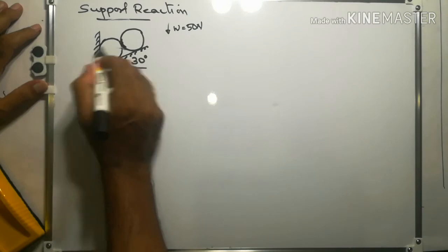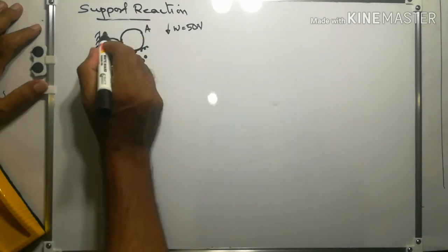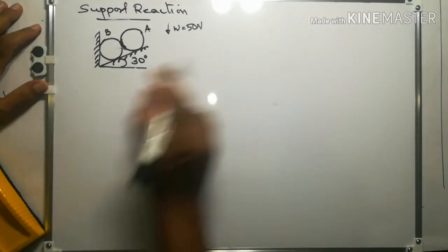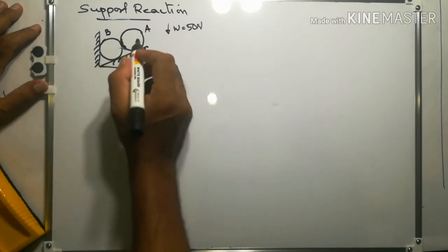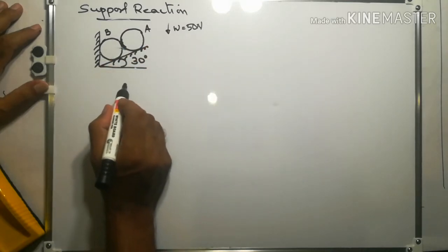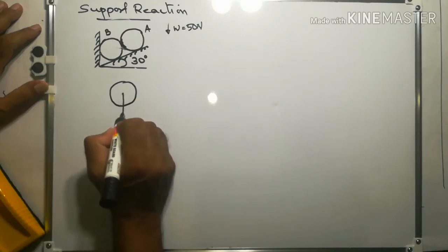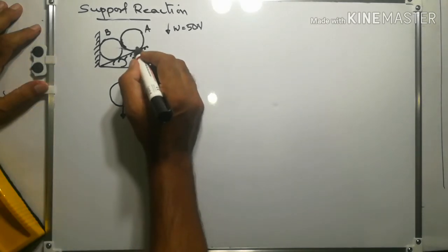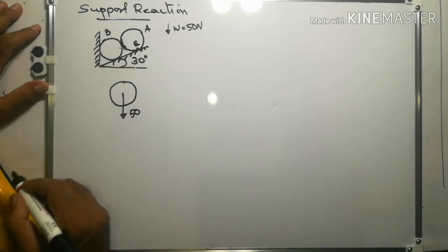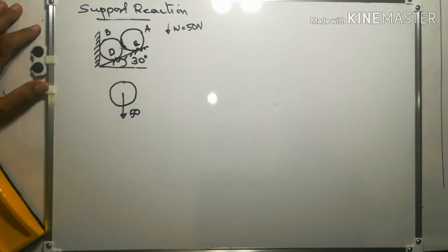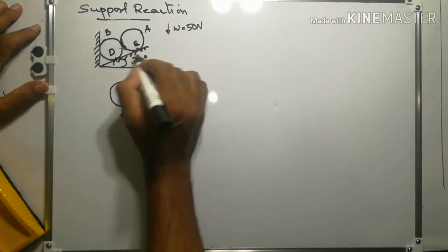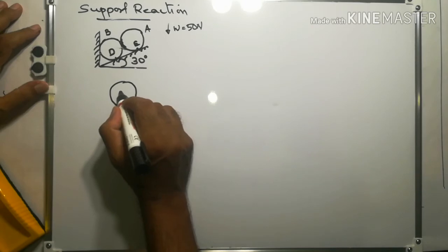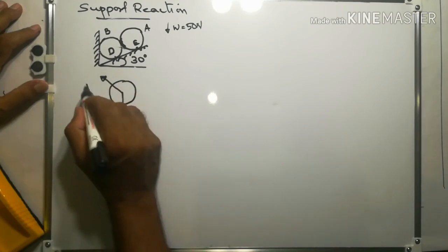Let this be ball A and this be ball B. If we consider ball A and draw the free body diagram, its weight will be acting vertically downwards through the center of gravity — that is 50 Newton. The reaction at point E, RE, will be acting perpendicular to the inclined plane.